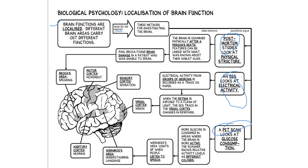In post-mortem studies, the brain is examined physically after a person's death. Features observed can be linked with what was known about the person while they were alive. For example, Paul Broca found that the brain was damaged in a patient who was unable to speak, and this damage was found to be in Broca's area, which is responsible for speaking. This was found through a post-mortem study.